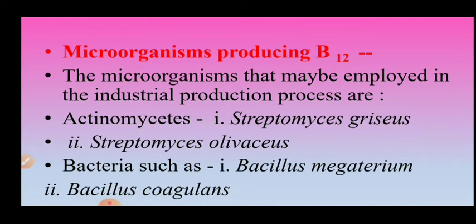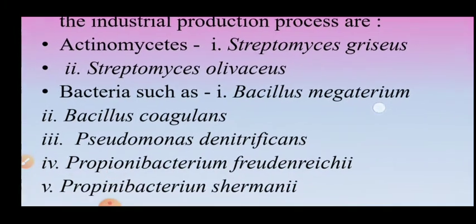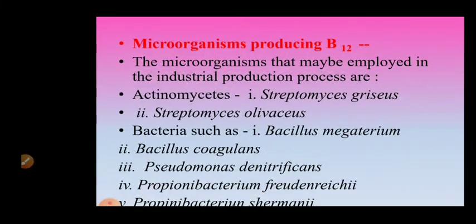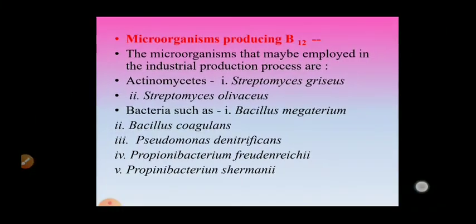The microorganisms that may be employed in industrial production of vitamin B12 are actinomycetes like Streptomyces griseus, Streptomyces olivaceus; bacteria such as Bacillus megaterium, Bacillus coagulans, Pseudomonas denitrificans; and Propionibacterium species like Propionibacterium shermanii and Propionibacterium freudenreichii.